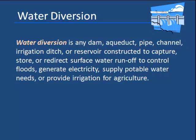Good evening and welcome to this tutorial on water diversion. You can see the definition of water diversion there on the screen and it's quite a broad definition. It includes dams, aqueducts, holding ponds, irrigation ditches, pipes, channels, and our own Lock Raven Reservoir — an example of diverting water from its natural flow into a body of water that's usually used for some purpose by humans.